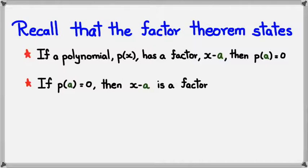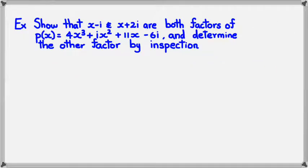So with that in mind, we're going to try this with complex numbers. I'm just going to have a look at one example in this session. So here's a question. Show that x minus i and x plus 2i are both factors of p of x, which is that really big function there, and then determine the other factor by inspection.